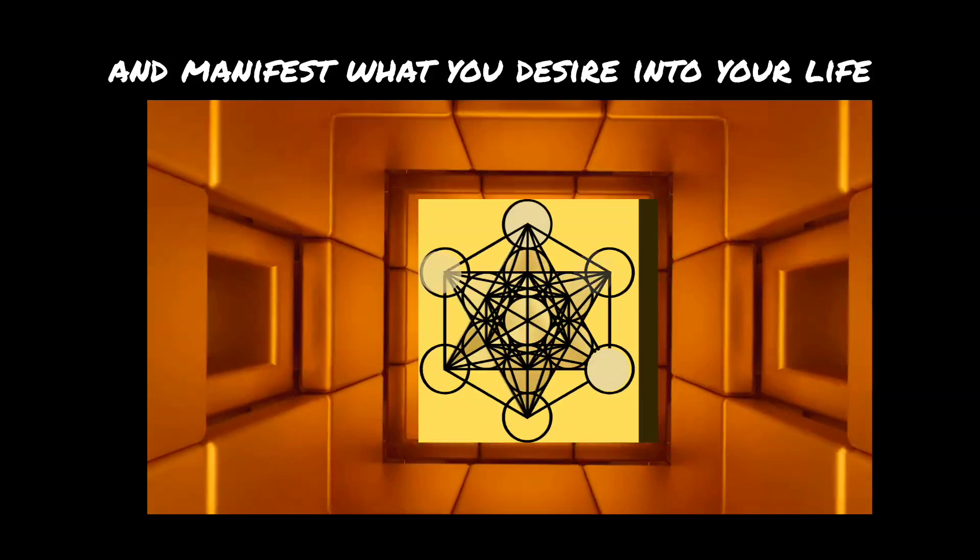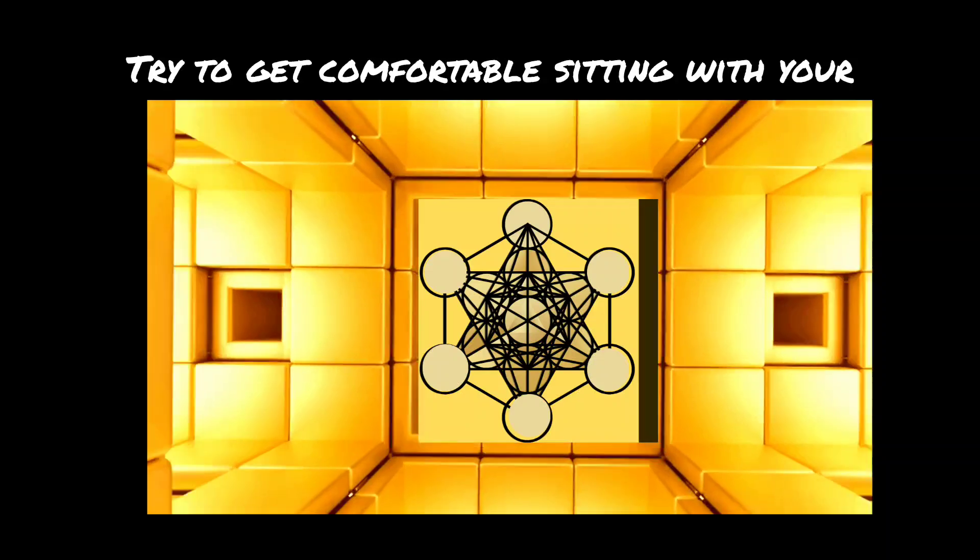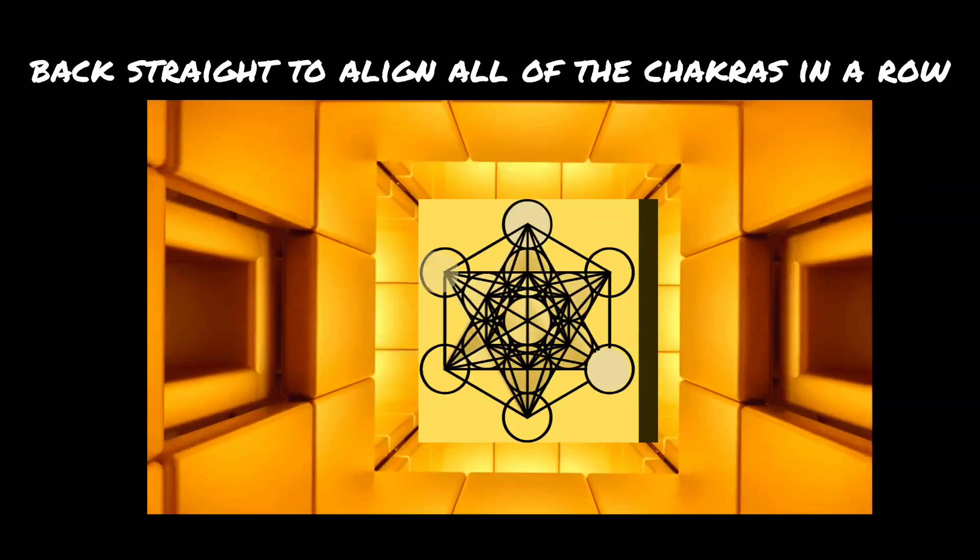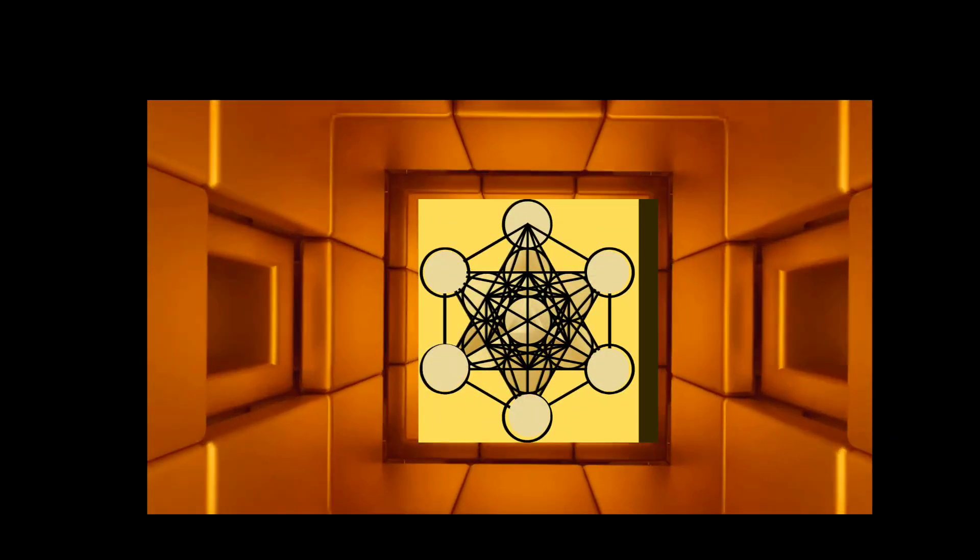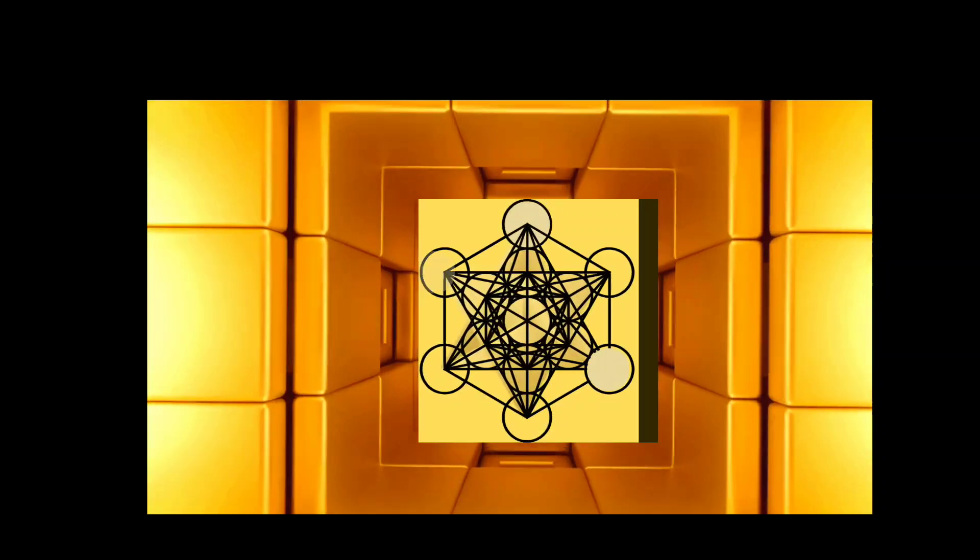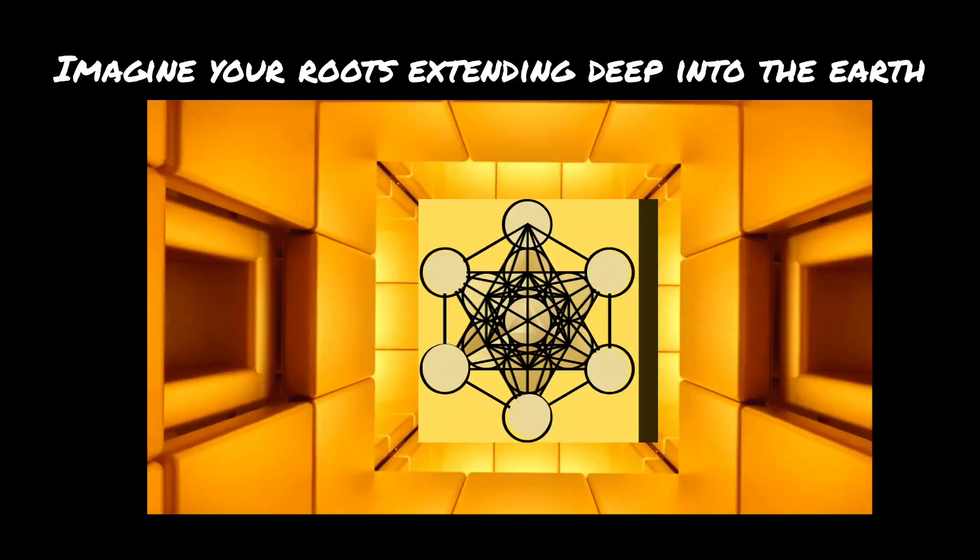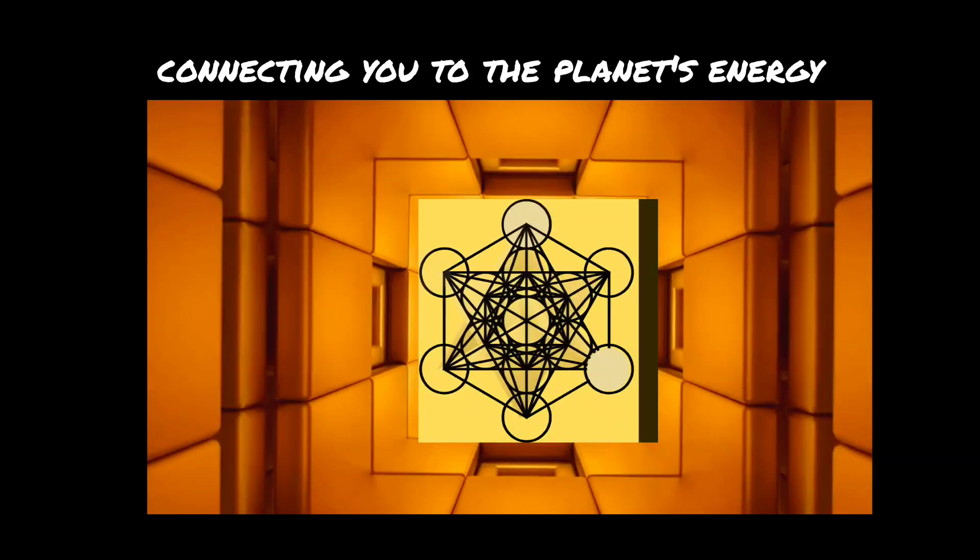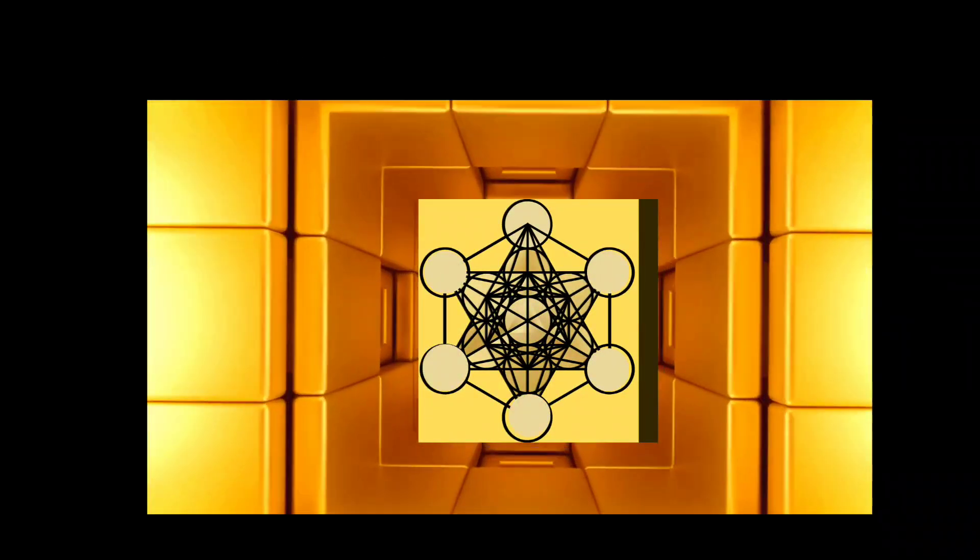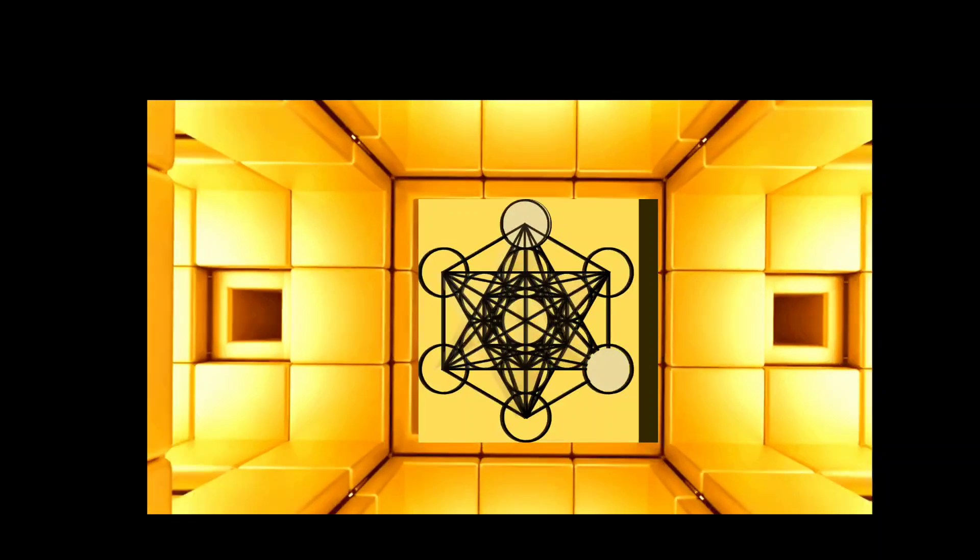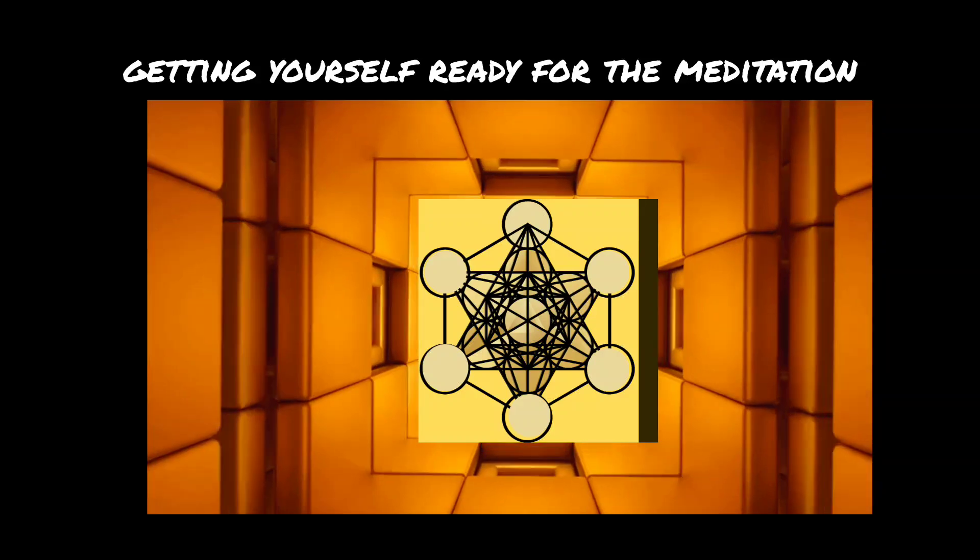Step four: try to get comfortable sitting with your back straight to align all of the chakras in a row, either in the lotus position or sitting on a straight back chair. Step five: begin by grounding yourself. Imagine your roots extending deep into the earth, connecting you to the planet's energy. Feel your aura growing downwards towards the center of the earth and upwards towards the sky as you expand your mind, getting yourself ready for the meditation.